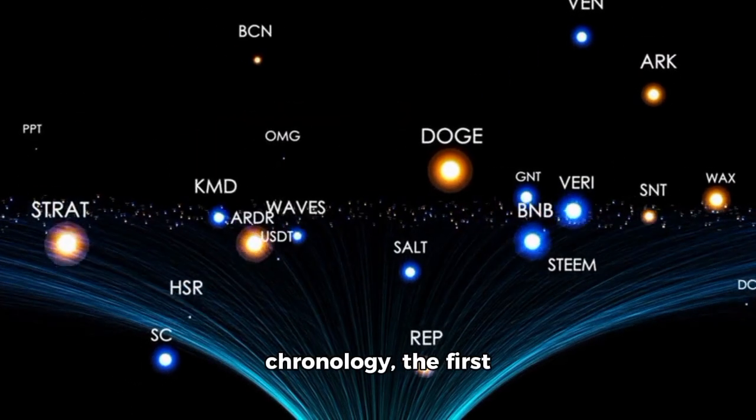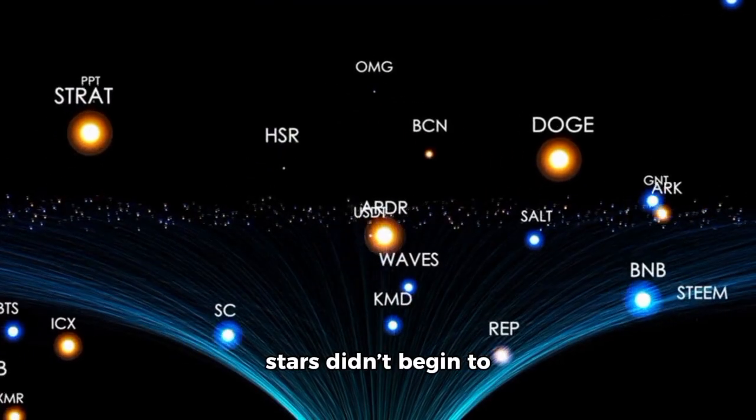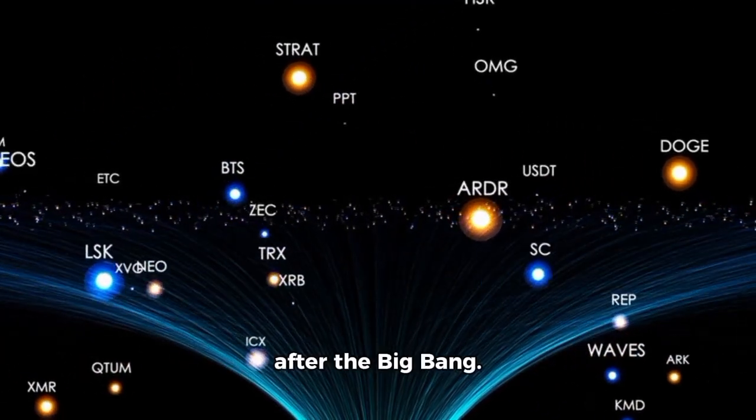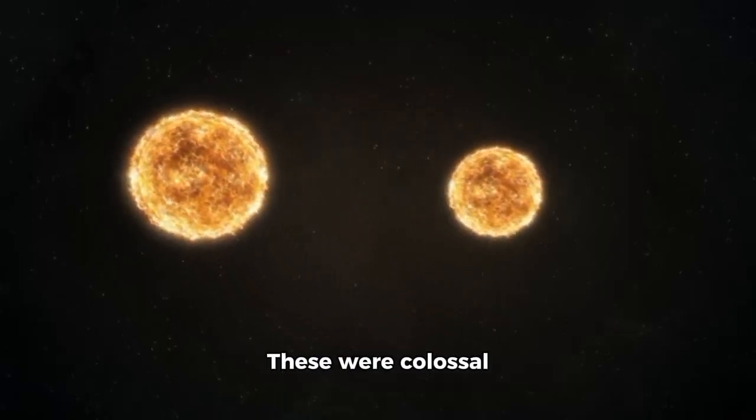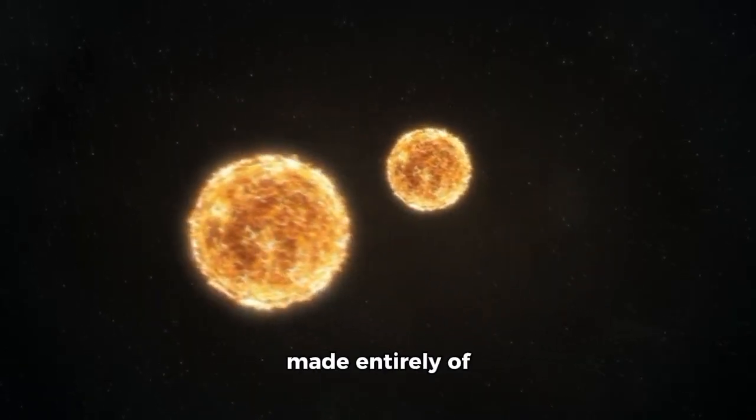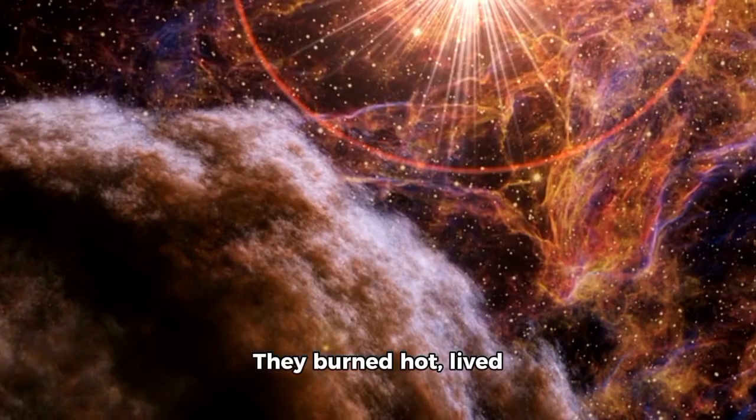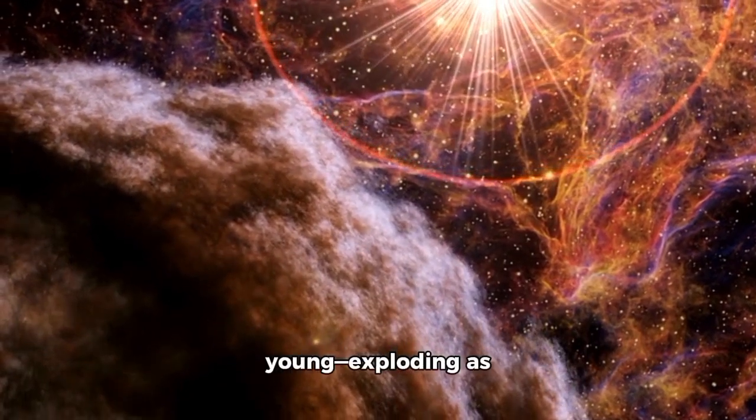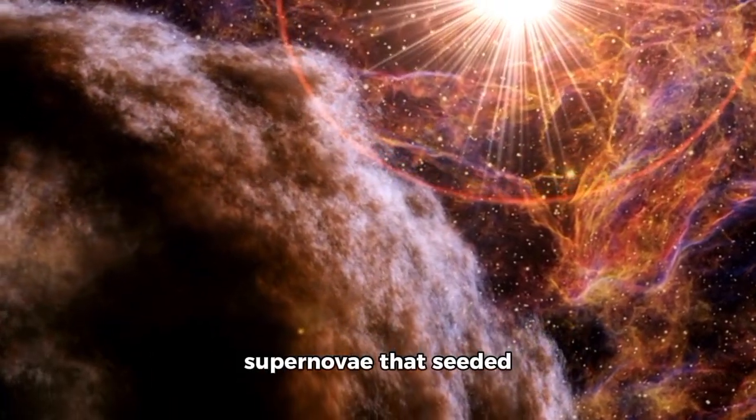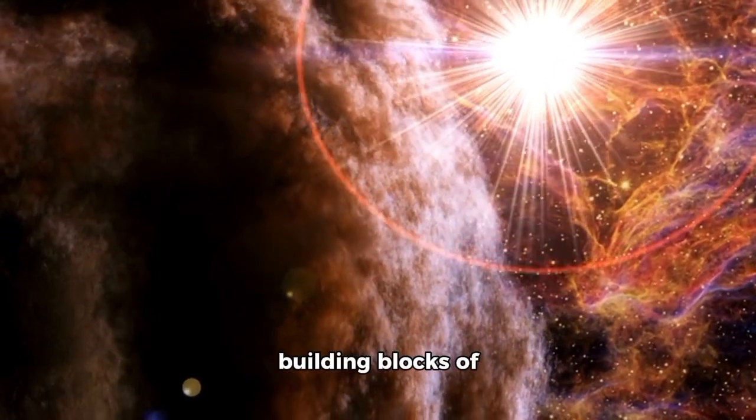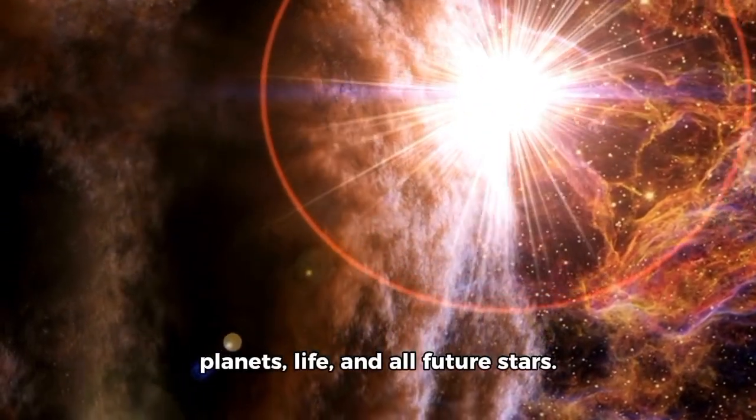According to this chronology, the first stars didn't begin to shine until about 100 to 200 million years after the Big Bang. These were colossal Population 3 stars made entirely of hydrogen and helium. They burned hot, lived fast, and died young—exploding as supernovae that seeded the cosmos with the first heavy elements, the building blocks of planets, life, and all future stars.